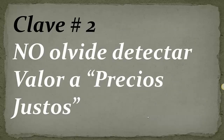Clave número 2: No olvidemos detectar valores a precios justos. A la hora de elegir entre dos o más compañías, debemos priorizar aquellas que nos paguen la mayor cantidad de dividendos por cada dólar invertido. En igualdad de condiciones, cuanto mayor sea el rendimiento del dividendo mejor, poniendo el eje en compañías que coticen por debajo de sus múltiplos de valuación históricos, para evitar pagar sobreprecios y potenciar nuestros rendimientos.